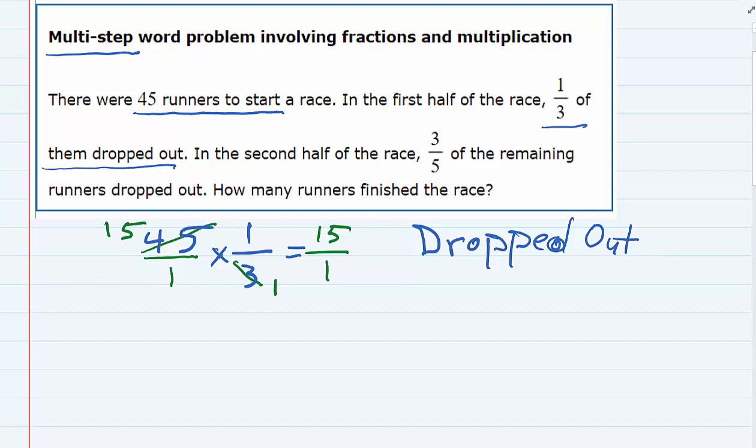1 times 1 is 1. So 15 people dropped out in the first half of the race. So that takes care of that part.